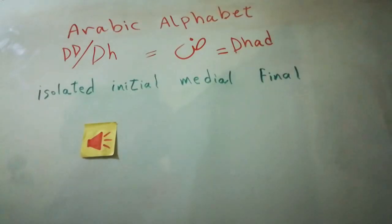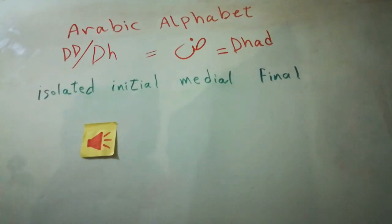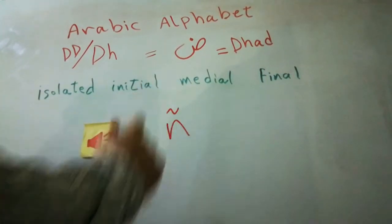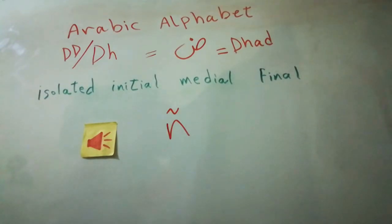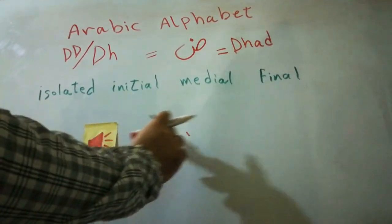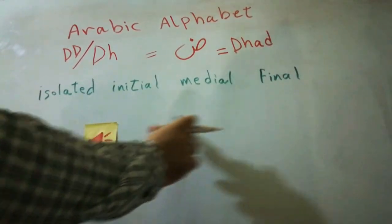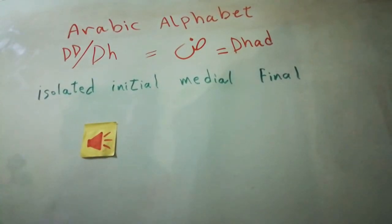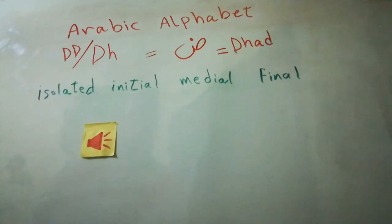We say that Arabic is 'the language of DOD,' meaning that Arabic is the only tongue that pronounces this letter DOD. For example, like in Spanish, they have a letter as an identification for their language. Exactly the same here — in Arabic we have the DOD as the key letter referring to the Arabic language.